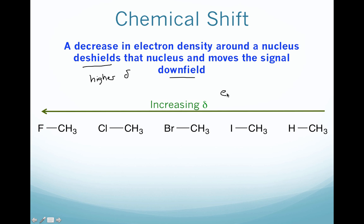What we're looking at here is the effect of having some electronegative atom bonded to a carbon with protons. That electronegative atom is withdrawing electron density, giving that carbon a partial positive charge and the electronegative atom a partial negative charge. So that's why we have a decrease in electron density around that carbon and a decrease in electron density around those protons.